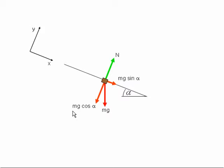We can then resolve the gravitational force Mg into two components, one along the slope, Mg sin alpha, and one perpendicular to the slope, Mg cos alpha.